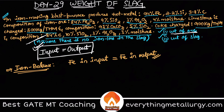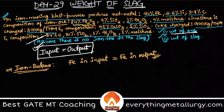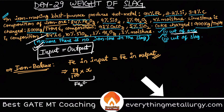For the input, we have iron ore which contains Fe. Any compound containing iron must be accounted for. We neglect heavy oxides like limestone since they don't contain iron. So in the iron ore, 84% is Fe2O3. If x is the total weight of ore, then 84/100 × x is the weight of Fe2O3.